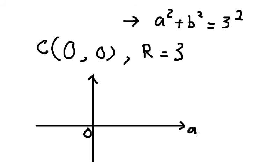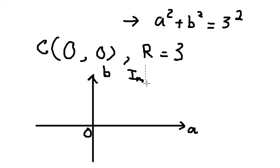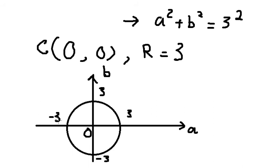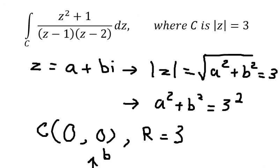This axis is for a (the real part) and this axis is for b (the imaginary part). Now we put the circle in here, and the radius is 3 — so we have negative 3 here and negative 3 here on the axes.